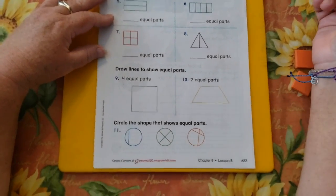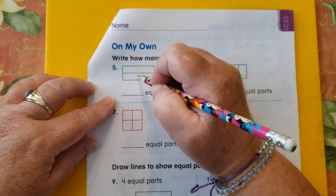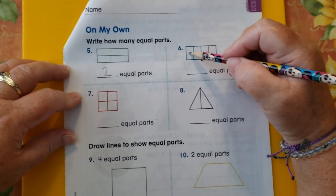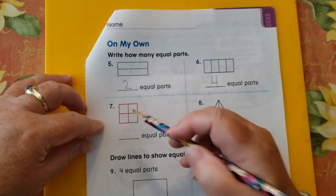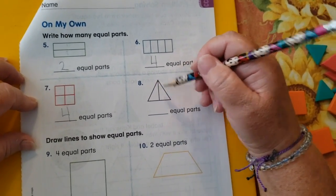All right, let's check. So how many equal parts? Here we have one, two. So you should have written a two. One, two, three, four. One, two, three, four. One, two.